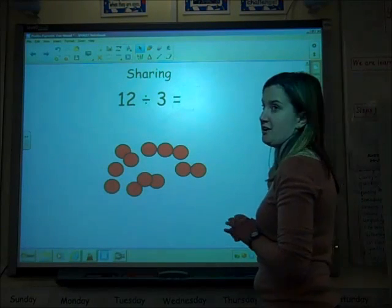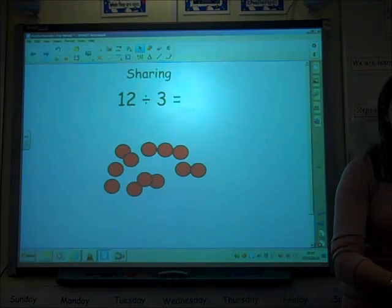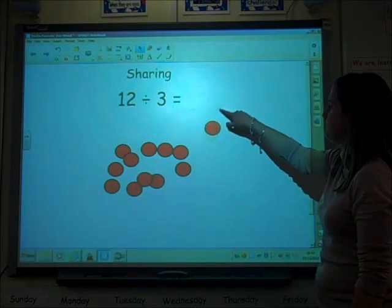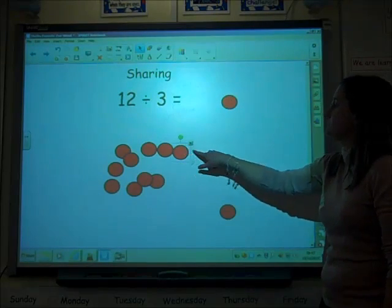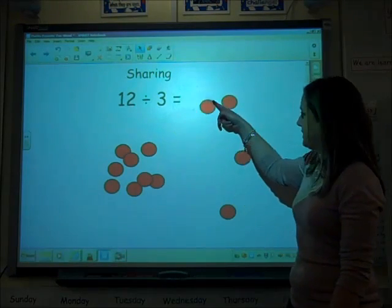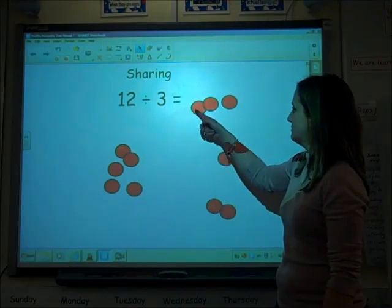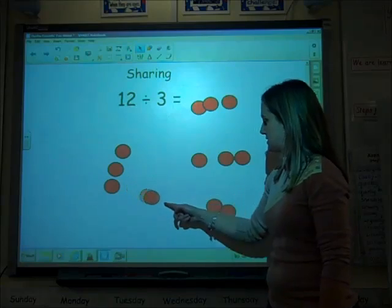So if I've got 12 shared between three, I'm sharing it out between three. Like any other operation, we start by doing it practically. We start this in Key Stage One.